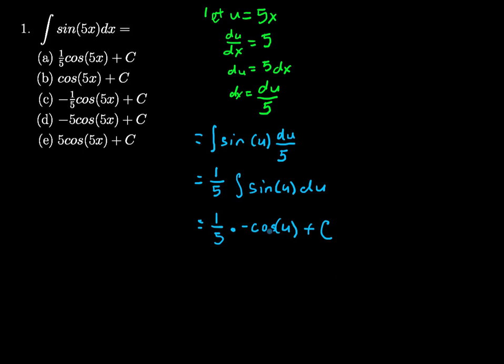And I have two things left to do. First thing, I need to get this 1/5 multiplied in with this negative cosine, and that's just negative 1/5 cosine of u plus C.